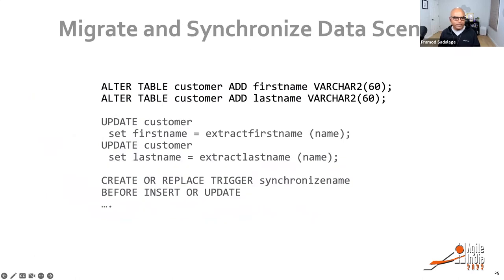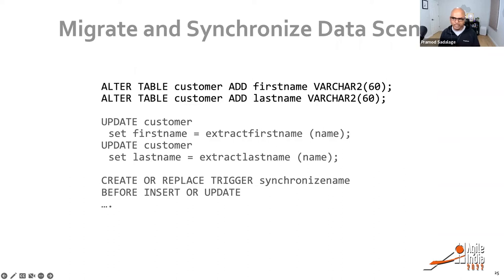We can get a little more complex: migrating the data and synchronizing together. We add the columns, update the existing data, and then put synchronization in place. This way we've taken care of existing data and future data being written by either old or new applications — all in one place. This is the expand stage and transition stage, when both old and new are in play.